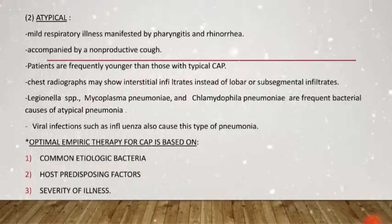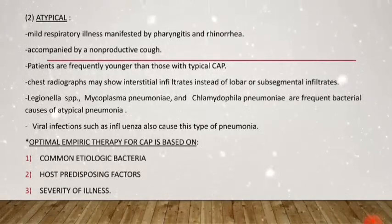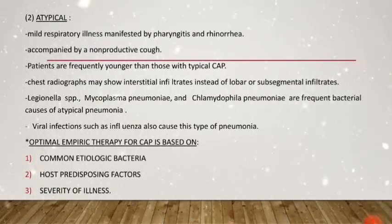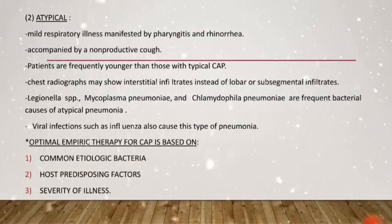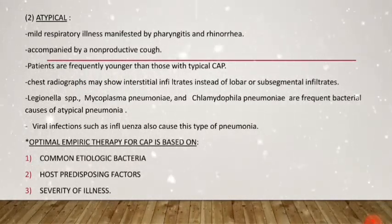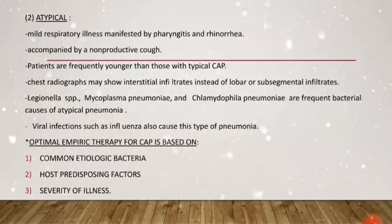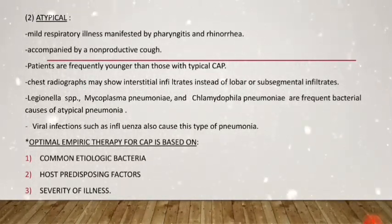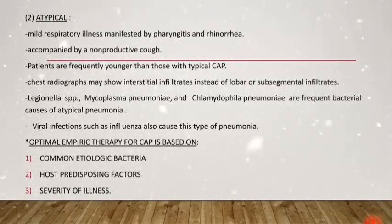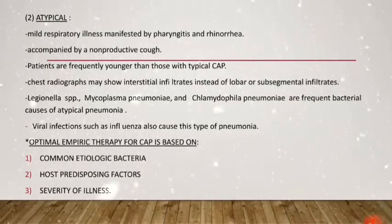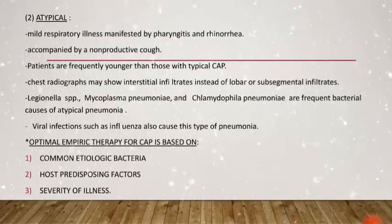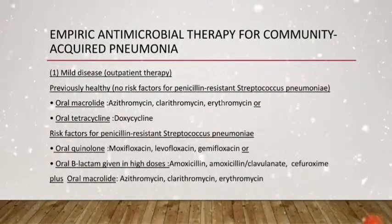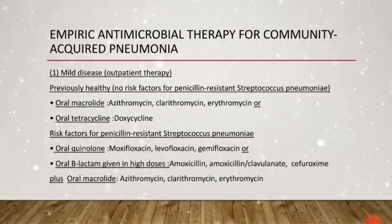Moving on to atypical community-acquired pneumonia: it is composed of a mild respiratory illness manifested by pharyngitis and rhinorrhea, accompanied by — very importantly — a non-productive cough. Patients are frequently younger than those with typical CAP. Chest radiograph will show interstitial infiltrates instead of lobar or subsegmental infiltrates. The main bacteria seen in atypical pneumonia include Legionella species, Mycoplasma pneumoniae, and Chlamydophila pneumoniae. Viral infections such as influenza also cause this type of pneumonia.